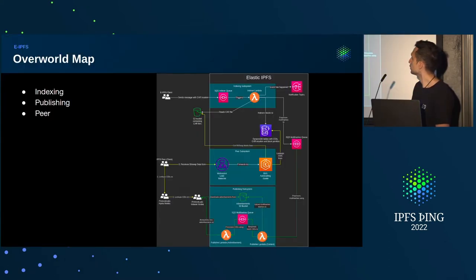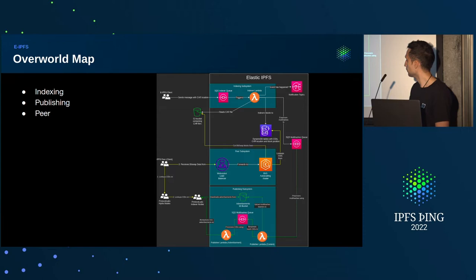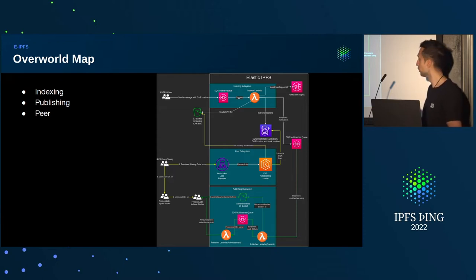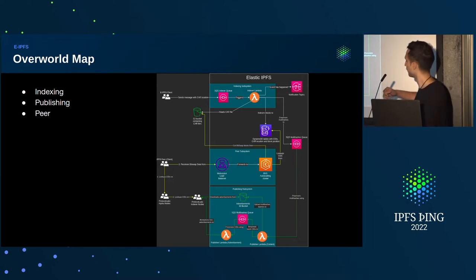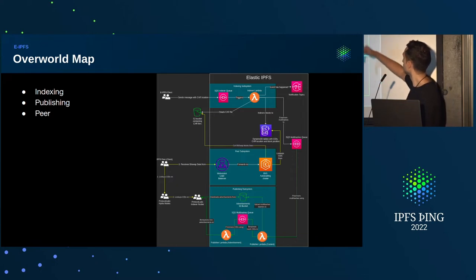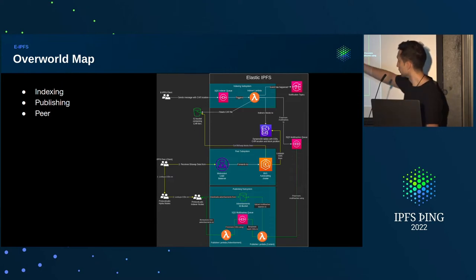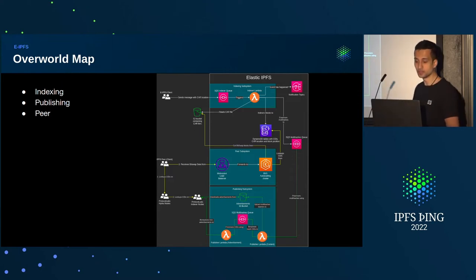Today I want to talk with you about a deep dive into the cloud architecture we created for Elastic IPFS to leverage AWS services. You can see here lots of components that are very familiar in AWS, like Lambdas, a cluster, DynamoDB, a messaging system using SQS and SNS, and S3 buckets of course. And those are all managed by infrastructure as code.